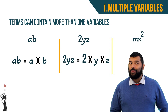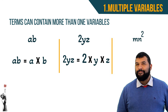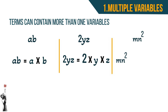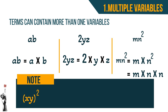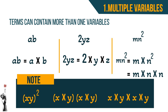Now that brings us to mn squared. mn squared means m times n squared, which breaks down to m times n times n. If we have (xy) in brackets and that's squared, it means xy multiplied by xy, which breaks down further to x times y times x times y.